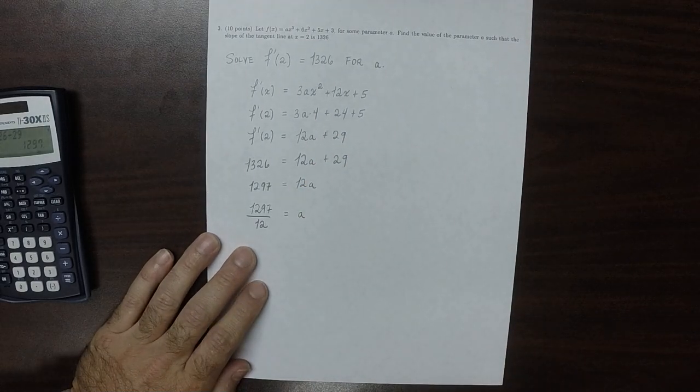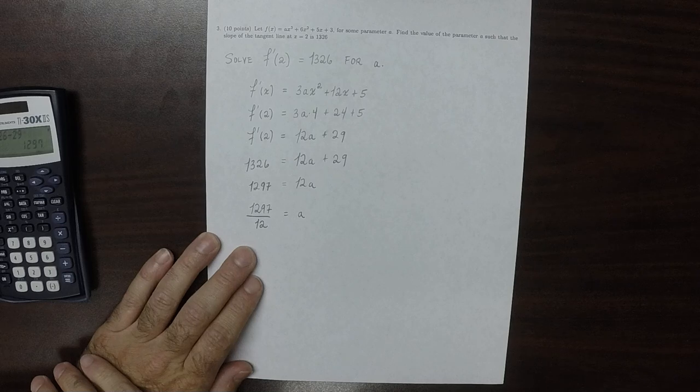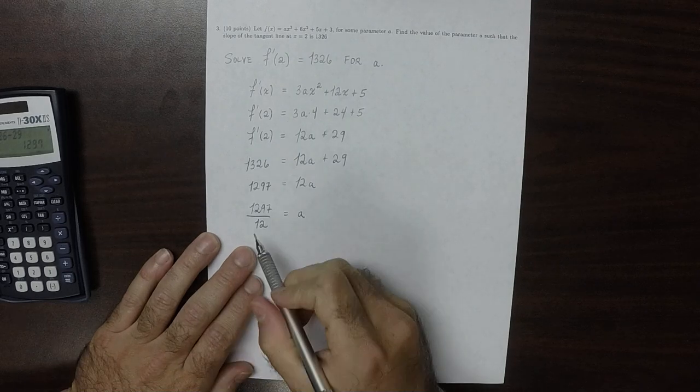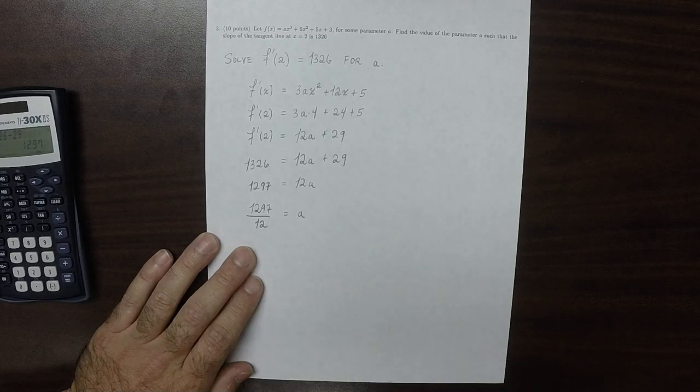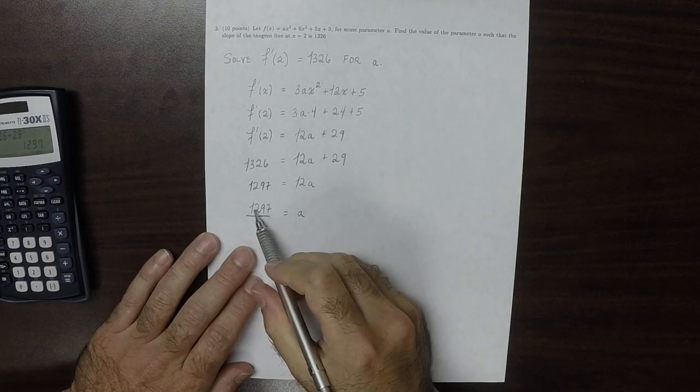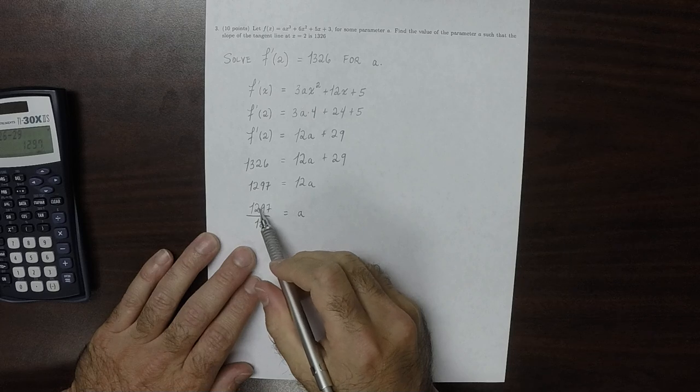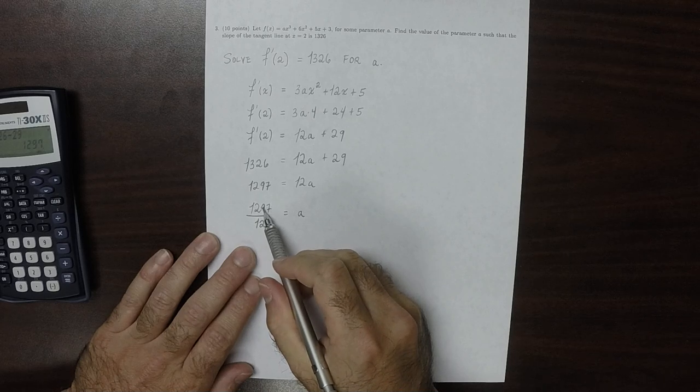So let's see, can that fraction be simplified at all? Well, 12 is divisible by 3 and 4. That's not divisible by 4, but is it divisible by 3? So 1 plus 2 is 3, plus 9 is 12, plus 7 is 19, which is not divisible by 3. So that's the simplest answer.